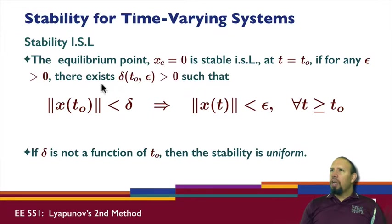If for any epsilon greater than zero, there exists a delta that involves both t0 and epsilon greater than zero, such that if the initial value of x is within this delta ball, then x stays within this epsilon ball for all time. So this is stability in the sense of Lyapunov for time-varying systems.